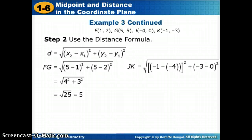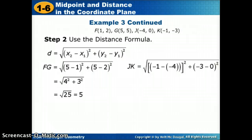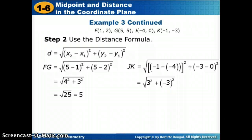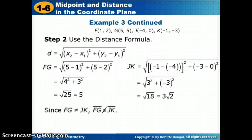Now do the same for JK. This one's messier because of negatives. The x of the second point minus the x of the first, and y of the second minus y of the first, all squared. Minus a negative gives us a positive, so negative 1 plus 4 gives us 3 squared equals 9. Negative 3 minus 0 gives us negative 3; negative 3 squared also gives us positive 9. We add to get the square root of 18. Since the square root of 18 does not equal the square root of 25, segments FG and JK are not congruent.